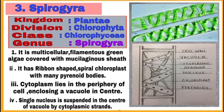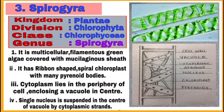Third organism is spirogyra. After writing its classification, write the characteristic features. First, it is a multicellular filamentous green algae covered with a mucilaginous sheath. It has ribbon-shaped spiral chloroplasts which have many pyrenoid bodies. The cytoplasm lies in the periphery of the cell and a vacuole is present in the center. There is a single nucleus which is suspended in the center of the vacuole by cytoplasmic strands.